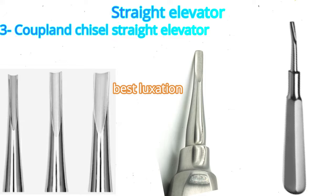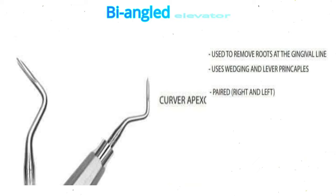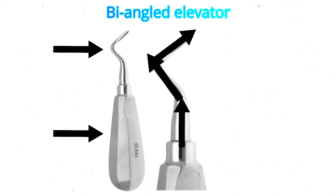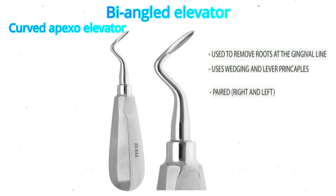Double-angled elevators are mainly used to remove root tips in both jaws. They are also very useful instruments for the extraction of impacted third molars of the upper jaw. Their handle is similar to that of the straight elevator, and the shank has a double angle so that the instrument may enter the socket. The curved apexo is the most common one. It is used for removing apical fragments of root deeply present in the socket of the lower jaw, especially molars. It is also used instead of the straight elevator in both upper and lower posterior teeth, since it is very similar to the straight apexo but generates less force due to the angulation.